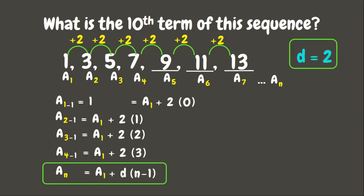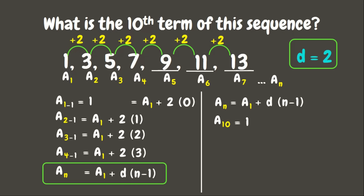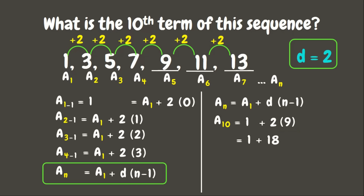Let us find the 10th term using this rule. a sub 10 = a sub 1 + d × (n − 1) = 1 + 2 × (10 − 1). Applying order of operations (PEMDAS/GEMDAS): first, solve inside the parentheses — 10 − 1 = 9. Then multiply: 2 × 9 = 18. Finally, add: 1 + 18 = 19. Therefore, the 10th term of this sequence is 19.